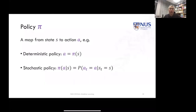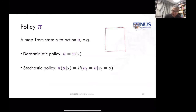We'll start with our first concept, which is the idea of a policy. We're going to denote a policy with the Greek letter pi, and it's going to map from a state to an action. This is actually very close to our supervised learning paradigm — we can think of states as individual instances in our data matrix.